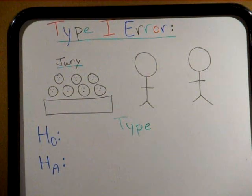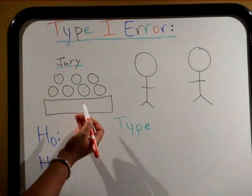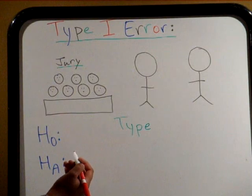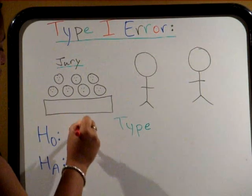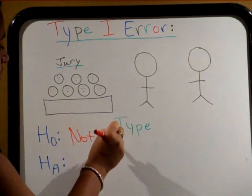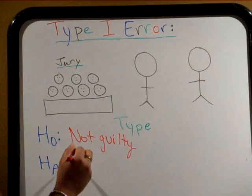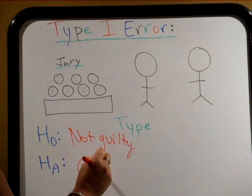Let's start off with a scenario. Innocent until proven guilty, right? So, for a court trial, the null hypothesis is that a person is not guilty. So, the alternate is that he is guilty.